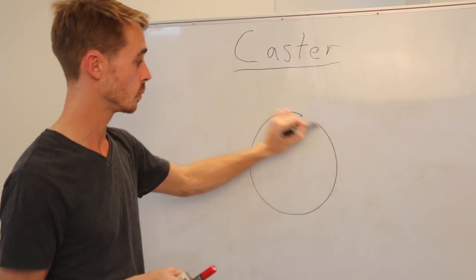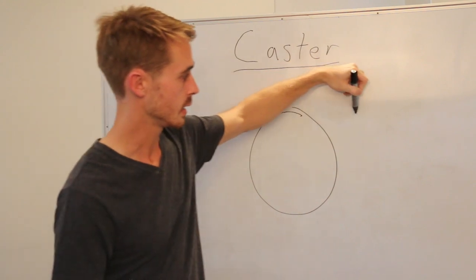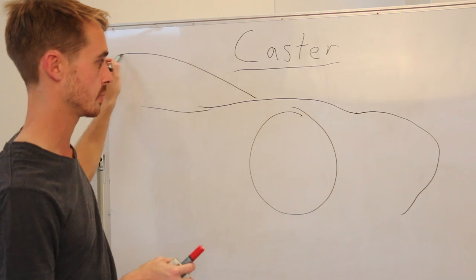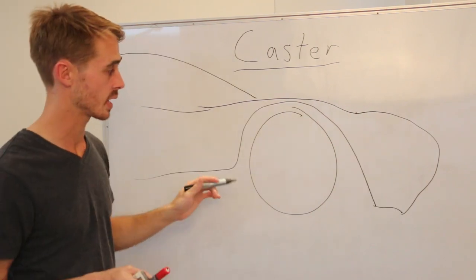We take a wheel looking at it from the side. If this is the front of the car, so that's the bonnet, comes back, cabin and we look at the steering side of things.